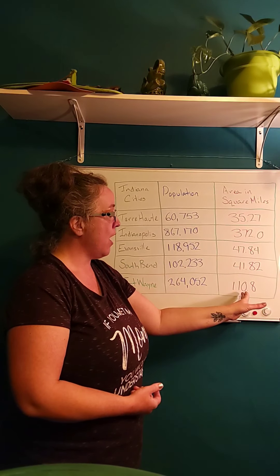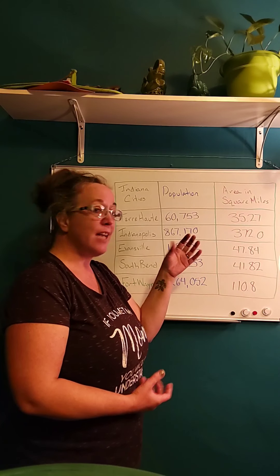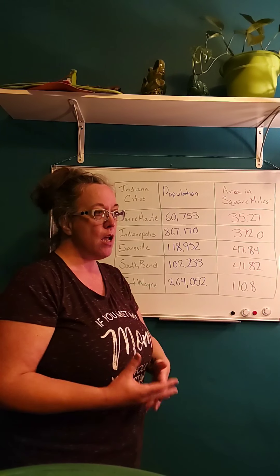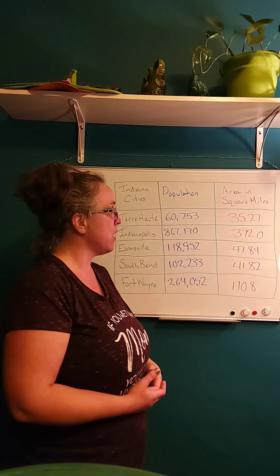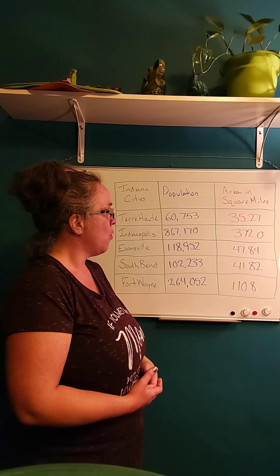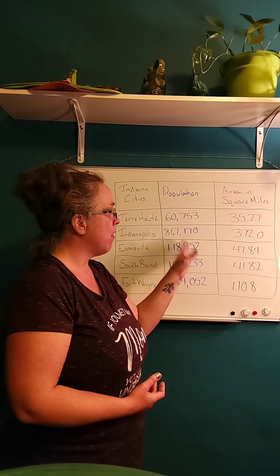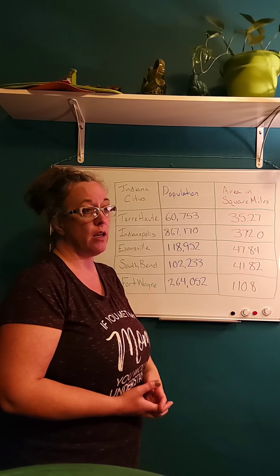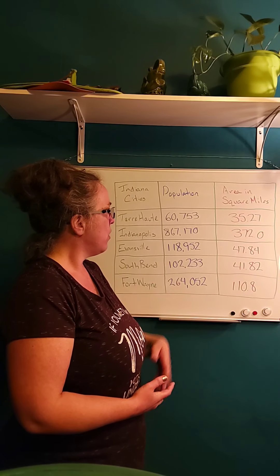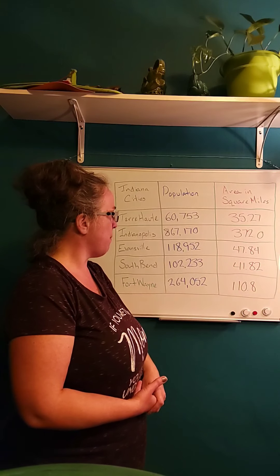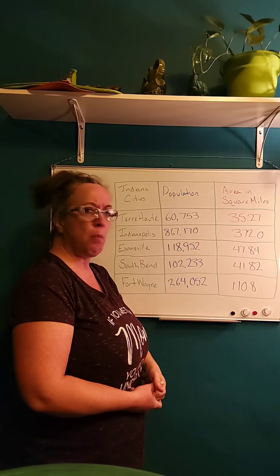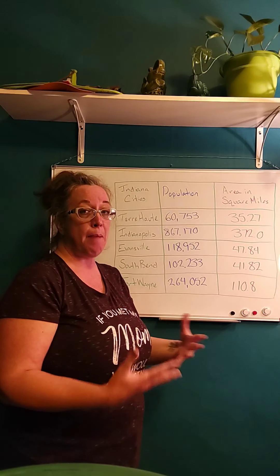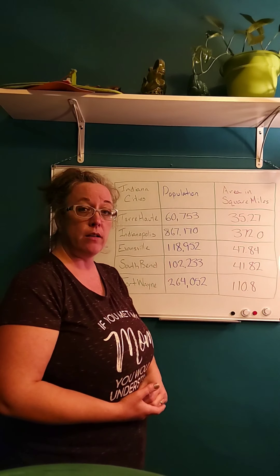We can do the same thing with the area in square miles column. Once I get that number information organized in a way that makes sense, I can start thinking about different meanings — like, the more people, the higher the square miles, which makes sense because more people need more room. I can also notice that Terre Haute has nearly the same square miles as South Bend but far fewer people, meaning people in Terre Haute have a lot more space.